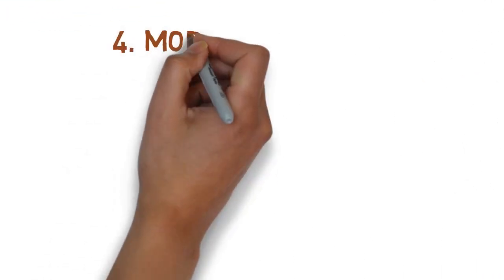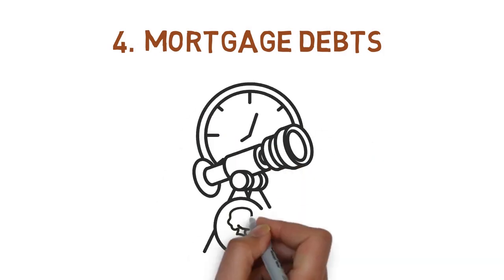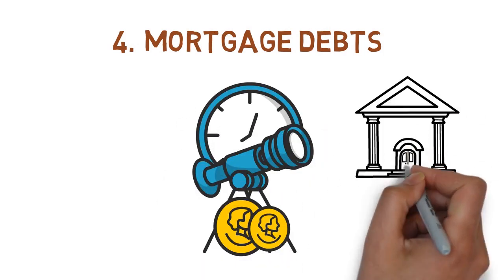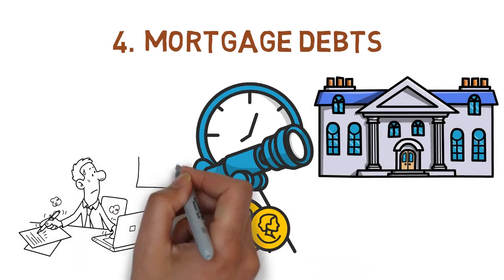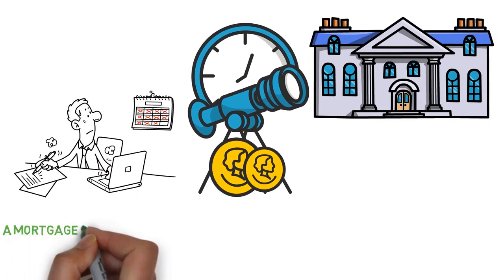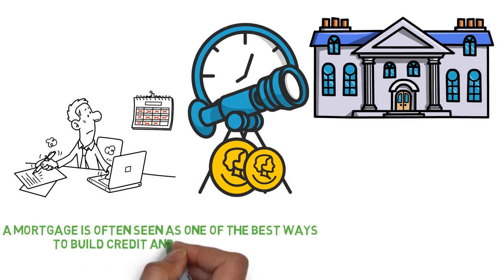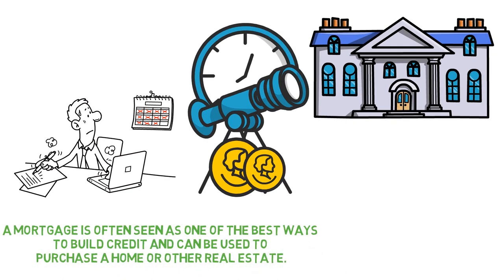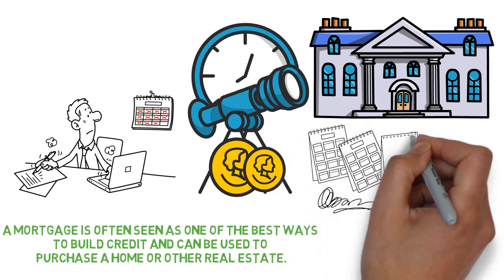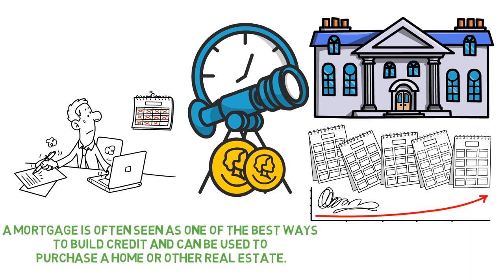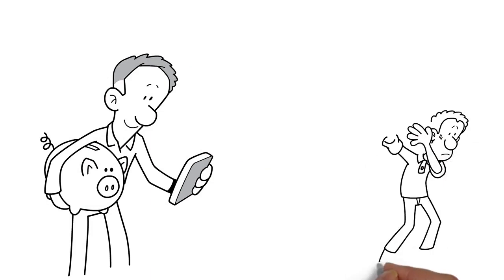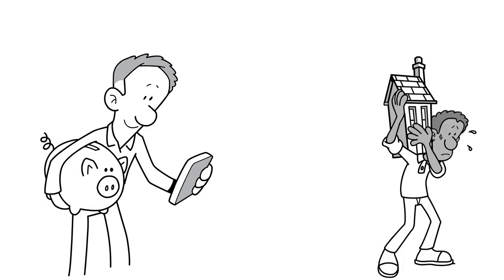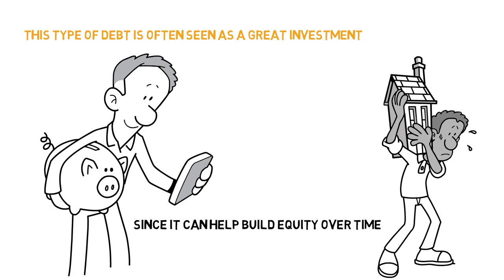Mortgage debts. A mortgage is a long-term loan used to purchase property. This type of debt is secured by the property itself and typically has the longest repayment terms out of all the different types. A mortgage is often seen as one of the best ways to build credit and can be used to purchase a home or other real estate because it gives the borrower more time to pay off the loan usually between 15 to 30 years. The interest rates on a mortgage are often lower than other types of loans but the repayment terms can vary greatly depending on the lender. This type of debt is often seen as a great investment since it can help build equity over time.